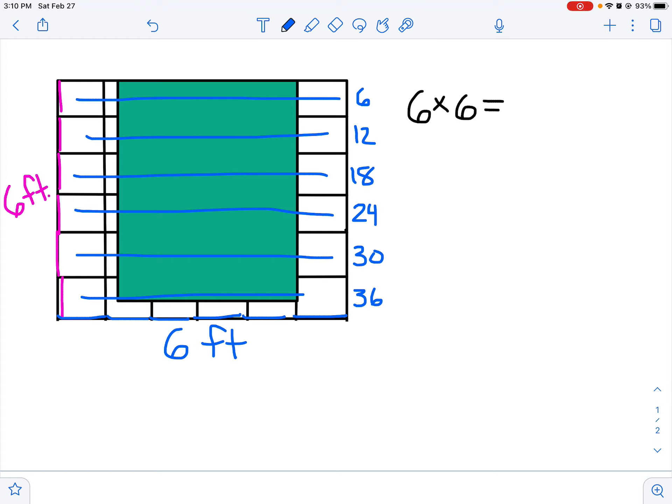Or I can use my distributive property. I could break my six up into let's say a three and a three. Maybe I know my three facts pretty well, so now I can solve the problem six times three plus six times three, which will make things a little easier. I can count by three: six times three is six, nine, twelve, fifteen, eighteen. So I know this is eighteen plus another eighteen.